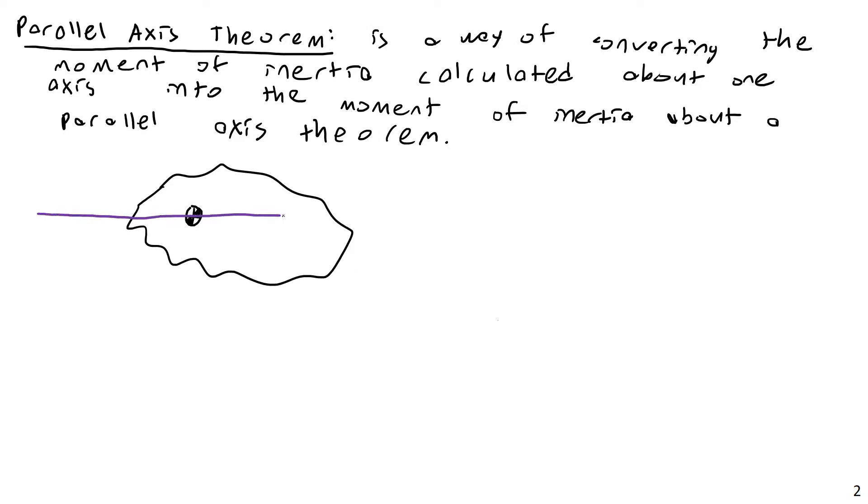So if we have this here, let's say we have, I'm going to call this the X axis, and then I'm going to have some other one a certain distance away, the X prime. And I'm going to say that the X axis is the axis passing through the centroid, an axis passing through the centroid, or I should actually just say a centroidal axis.